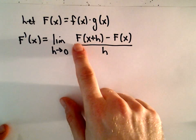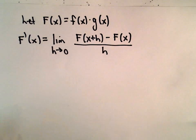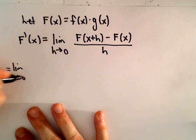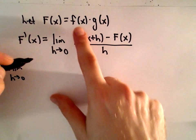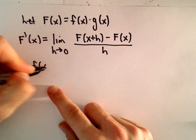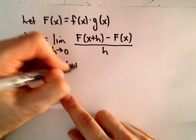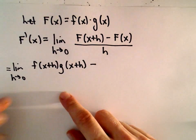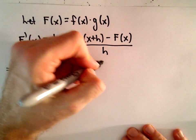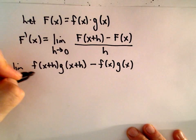Now I'm going to replace my capital F functions with little f and little g. We can rewrite this as the limit as h approaches 0. Instead of capital F of x plus h, we would have little f of x plus h times g of x plus h. Then subtract away the original function, capital F of x, which will be little f times little g, all over h.